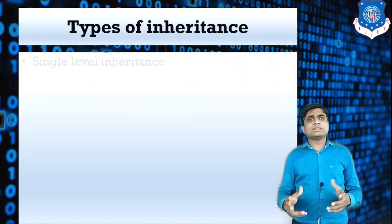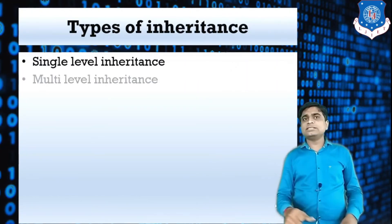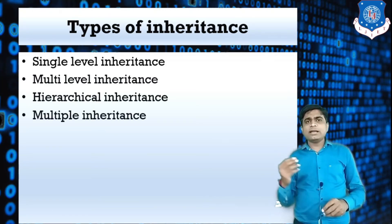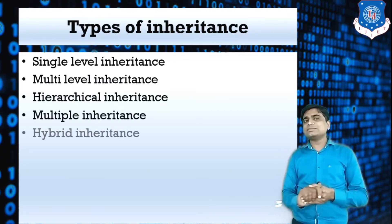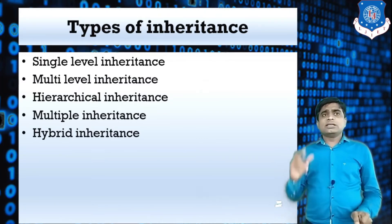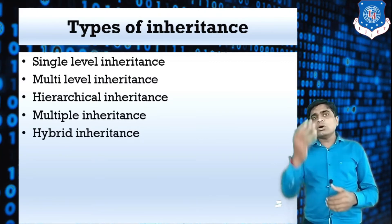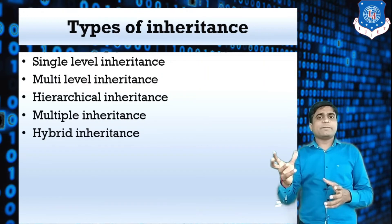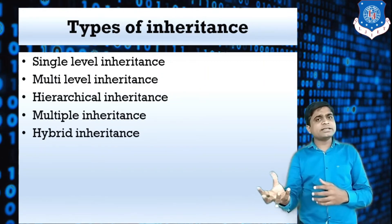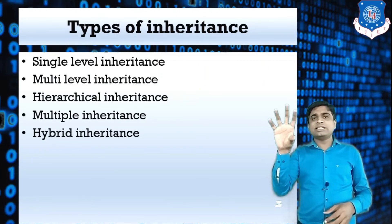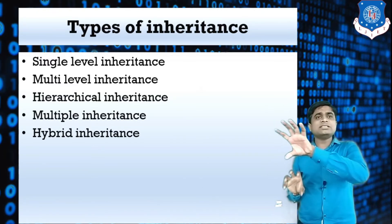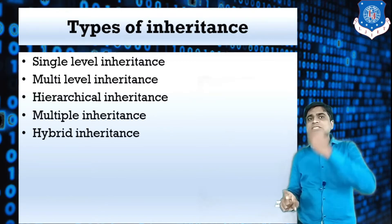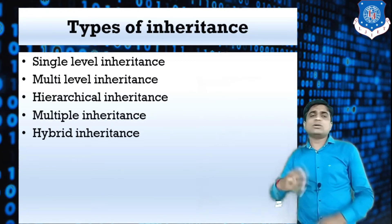There are different types of inheritance: single-level inheritance, multi-level inheritance, hierarchical inheritance, multiple inheritance, and hybrid inheritance. In single inheritance, one class — say class A as the base class — and class B as the derived class. A single class can access the property of another single class. That is called single inheritance.